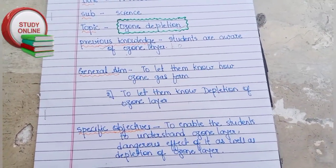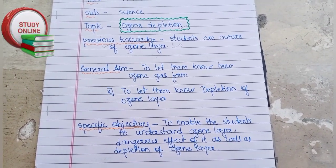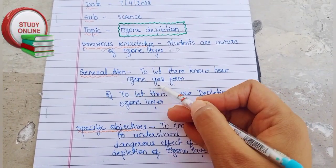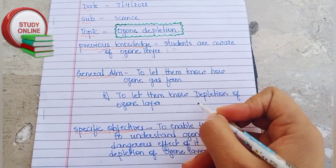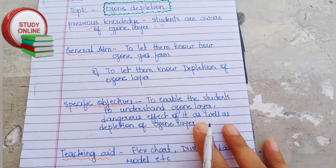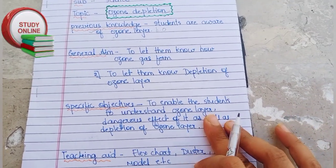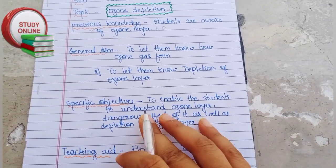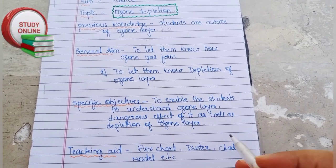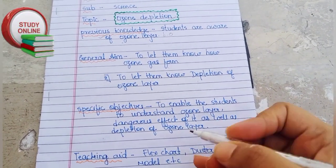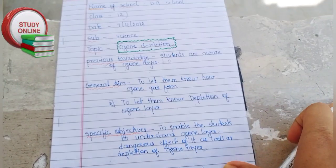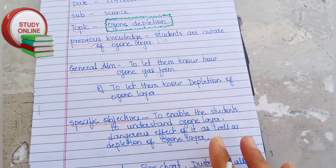For the general aim, we basically want to tell students about ozone gas and the depletion of ozone layer. For specific objectives, we have to write: to enable students to understand the ozone layer as well as the dangerous effects and depletion of the ozone layer.